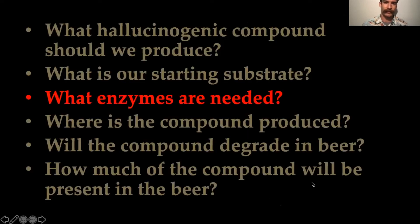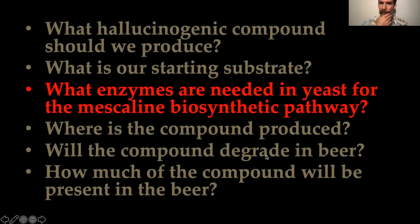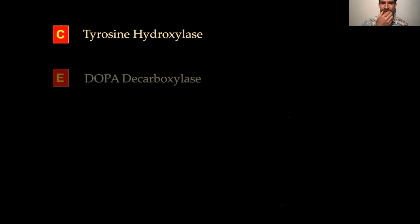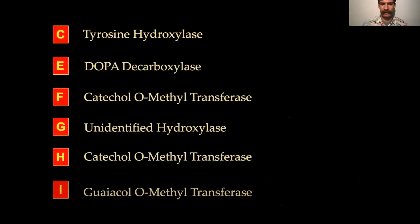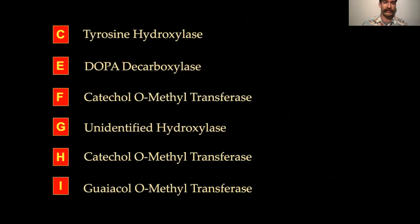Now we identify the enzymes needed for the mescaline biosynthetic pathway in yeast. Naming them by their trivial or colloquial names: tyrosine hydroxylase, DOPA decarboxylase, and so forth. Enzyme G is unidentified — we'll get to that.